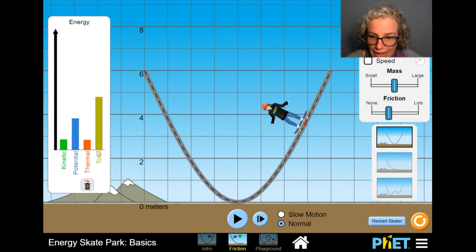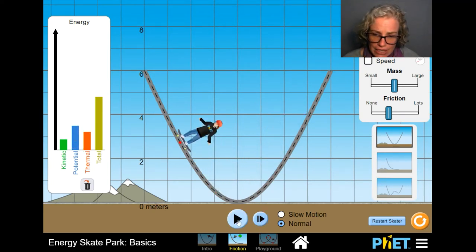But now, over time, we're going to see this thermal energy bar grow in height. Let's look as they roll more. So now that the skater has traveled along the ramp more, we have a higher amount of thermal energy. But whatever is not thermal is going to keep alternating between kinetic and potential.